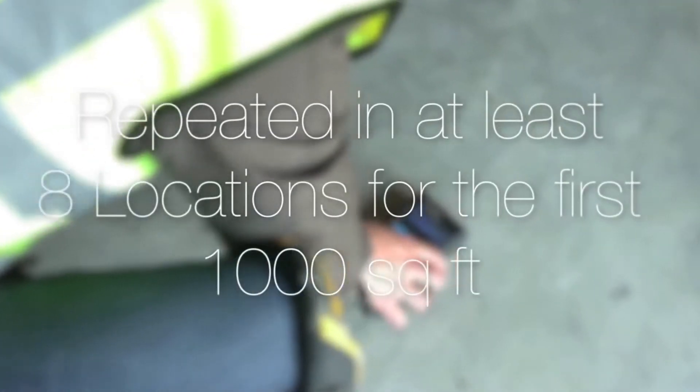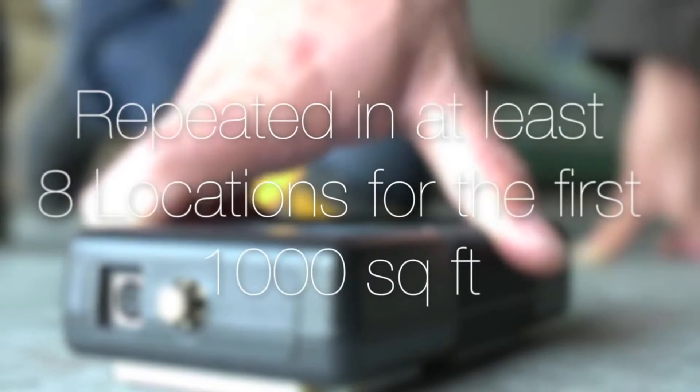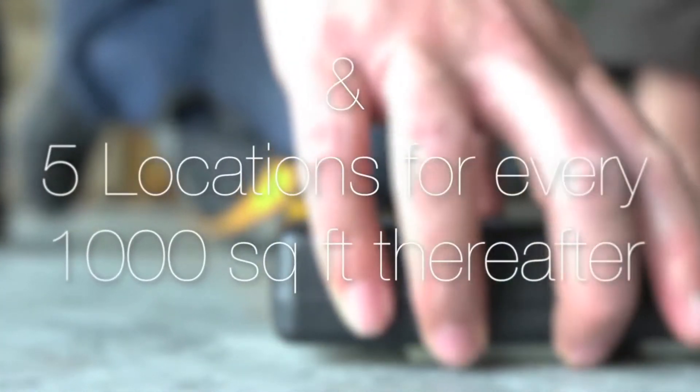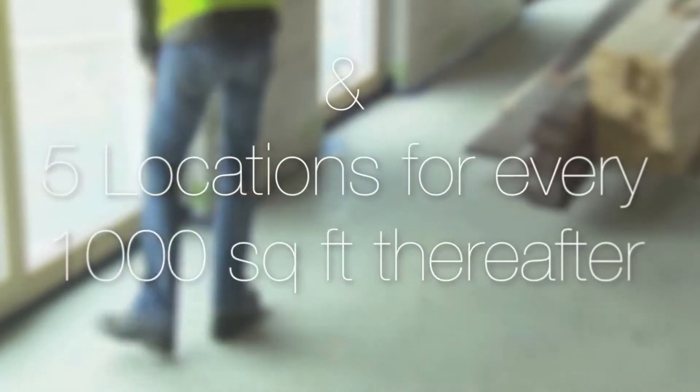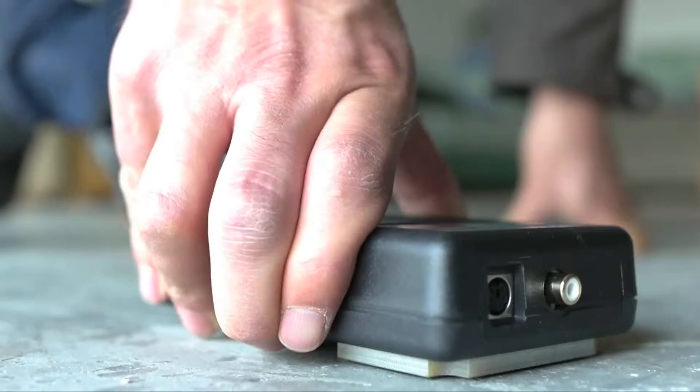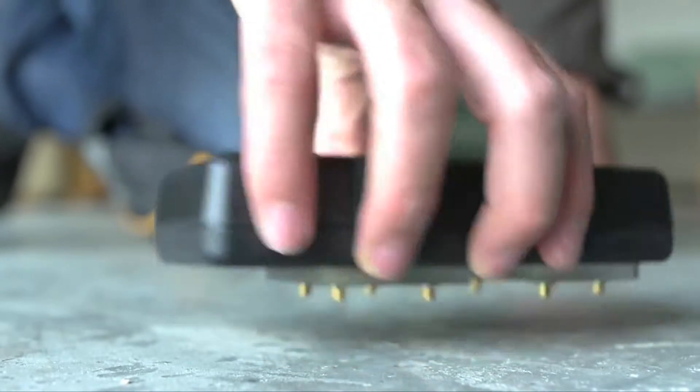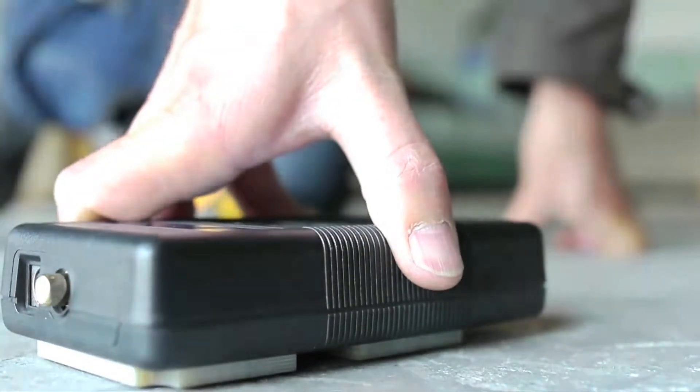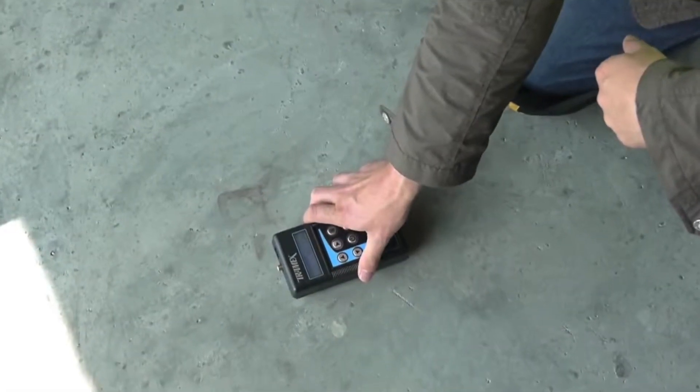This is repeated in at least eight locations for the first 1000 square feet and five for every 1000 square feet thereafter, allowing the user to build up a moisture map of the entire slab and identify when and where to test further, if testing for example to ASTM F2170.